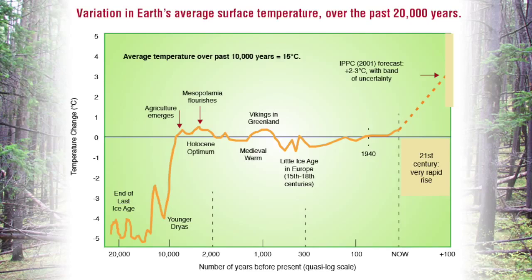That cooler period ended with what's known as the medieval warm period — when the Vikings colonized Greenland and Iceland and northern European cultures flourished. At the same time, Middle Eastern and Mediterranean cultures were struck by famine, because the rise in temperature also resulted in drought and massive crop failures. This medieval warm period ended roughly 1,000 to 800 years ago when we went into what's known as the mini ice age.